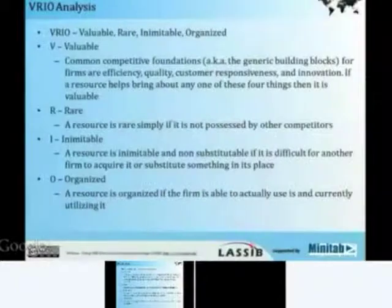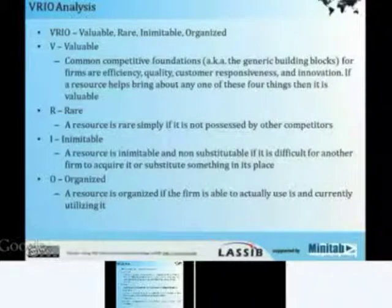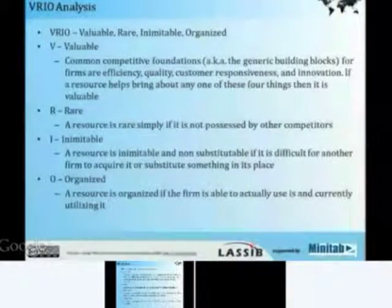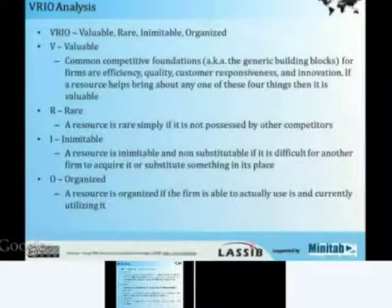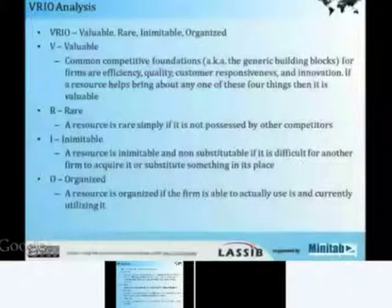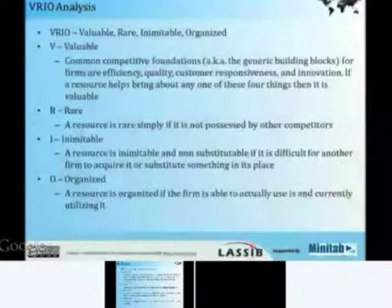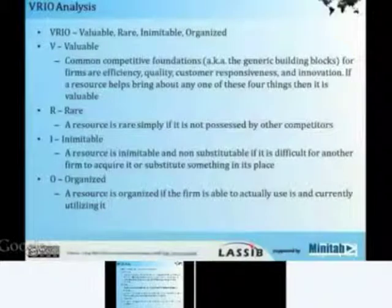A resource is inimitable and non-substitutable if it is difficult for another firm to acquire or substitute something else in its place. This is probably the toughest criterion to examine because, given enough time and money, almost any resource can be imitated. Even patents only last 17 years and can be invented around in even less time. One way to think about this is to compare how long it will take competitors to imitate or substitute that resource against the useful life of the product. Generally, intangible resources or capabilities like corporate culture or reputation are very hard to imitate and therefore inimitable.